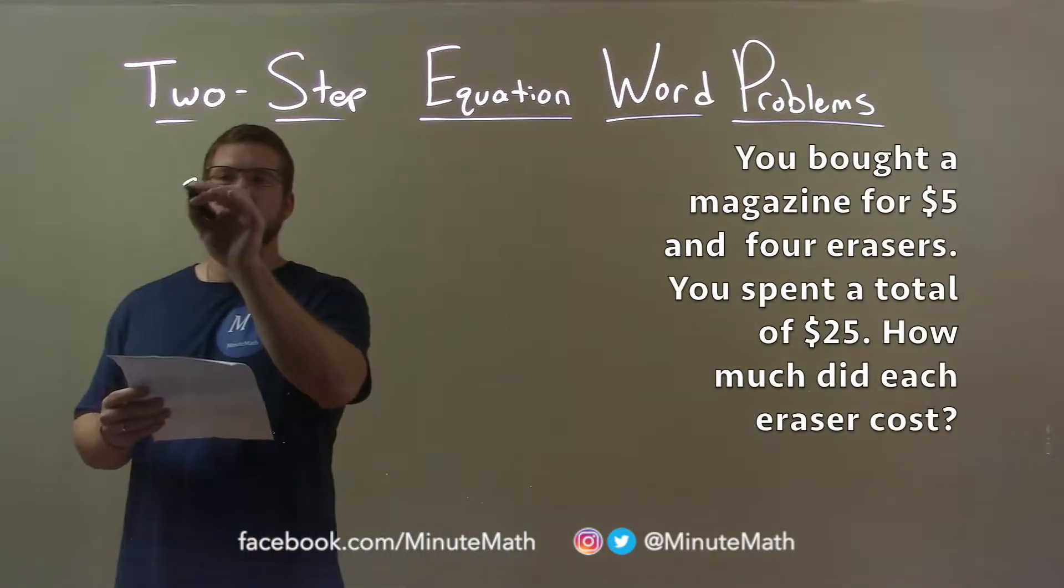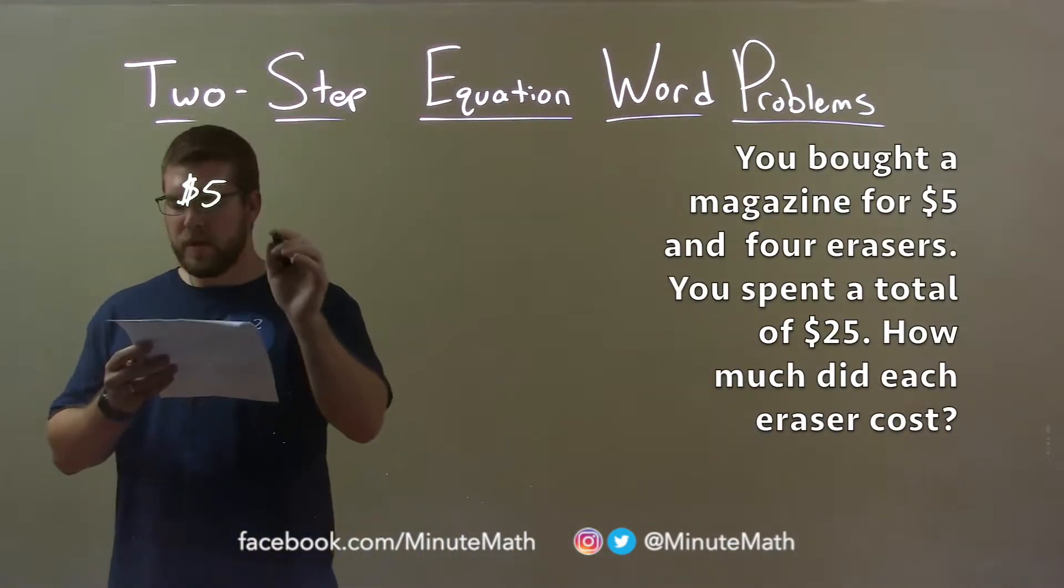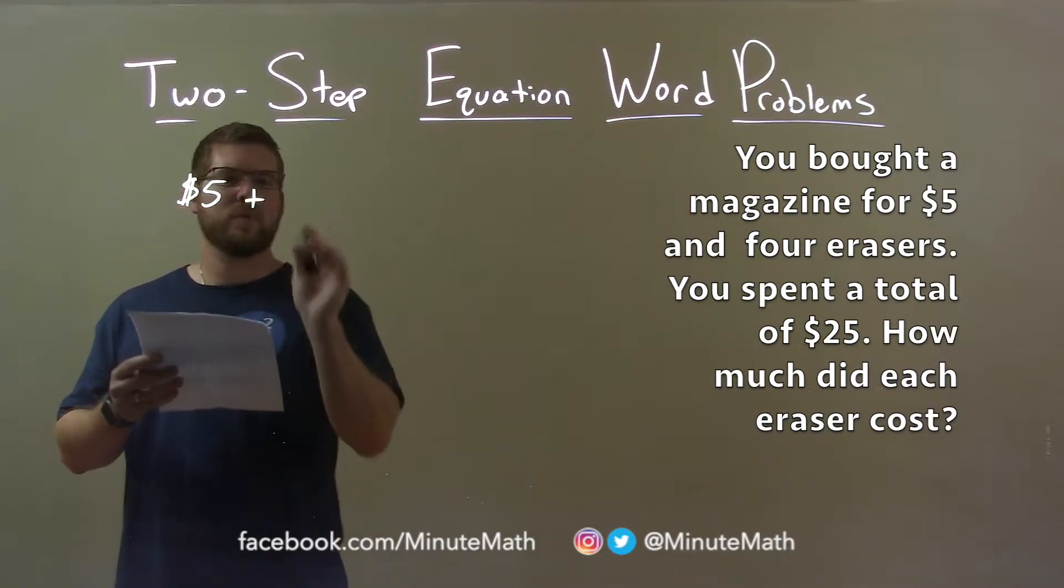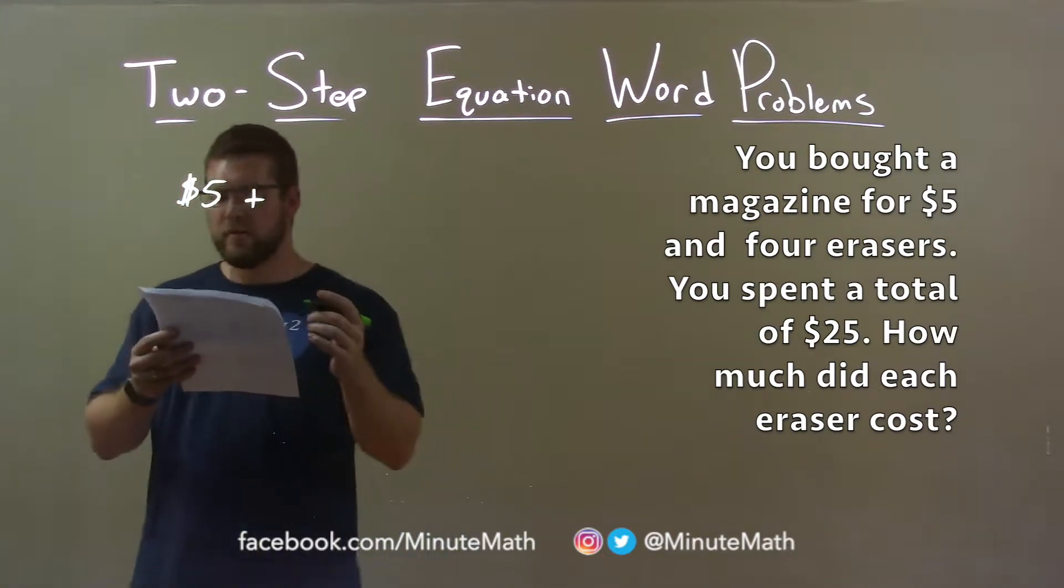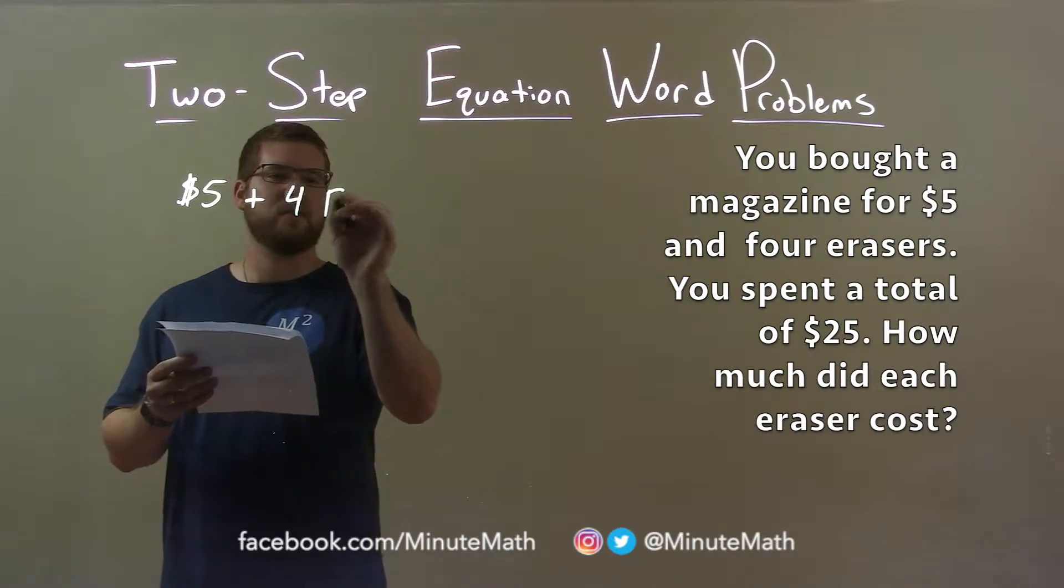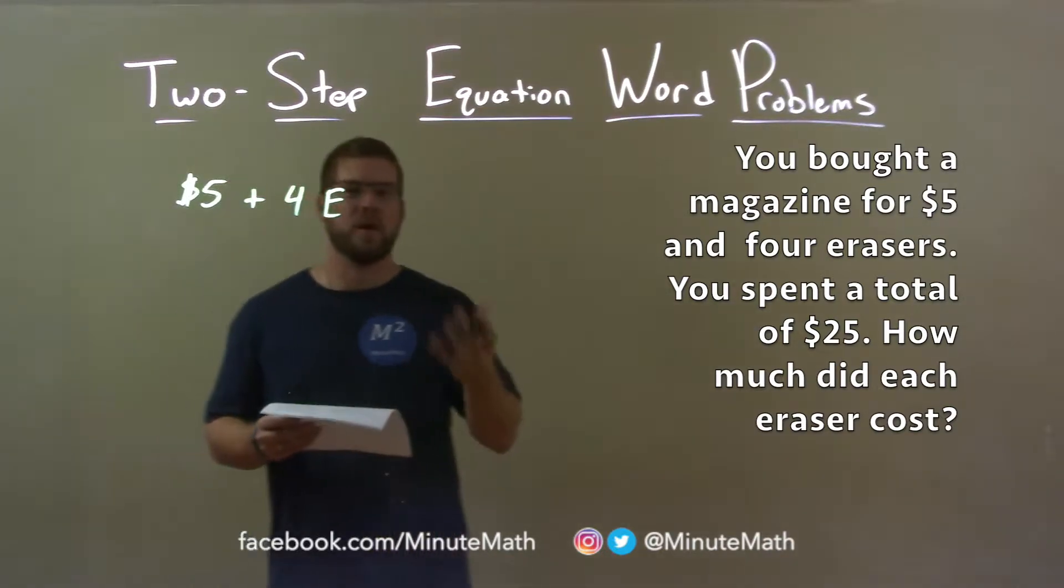So, we bought the magazine for $5. Now, we bought four erasers, so we can make an equation out of this. We bought four erasers, but we don't know the price of each eraser. So, let's let E represent the price of the eraser.